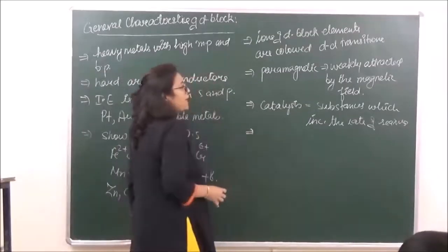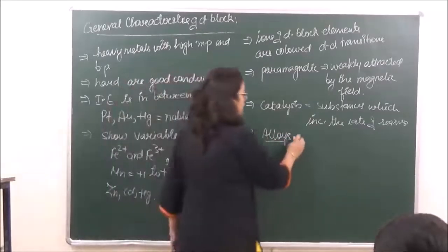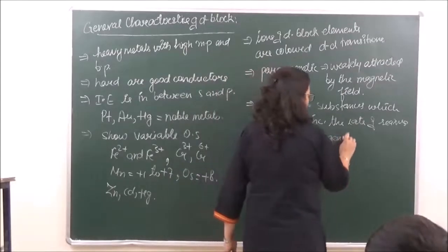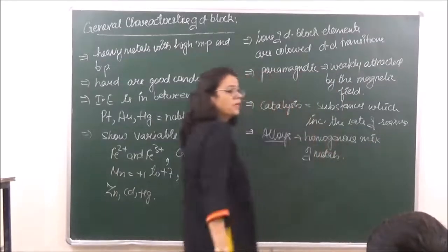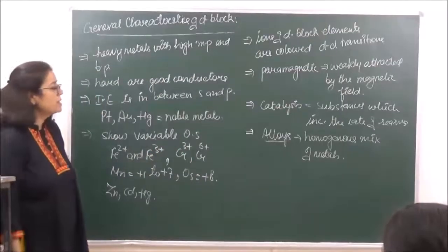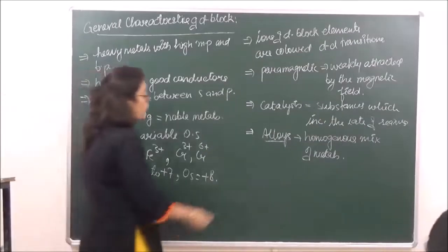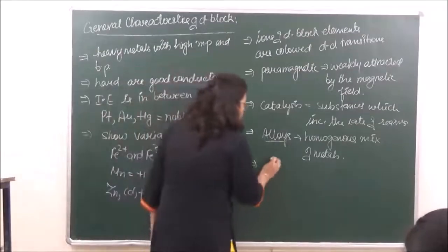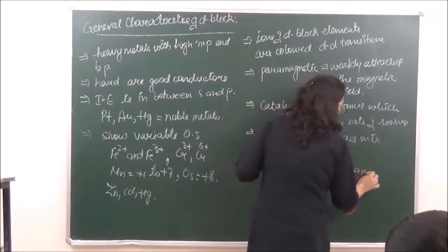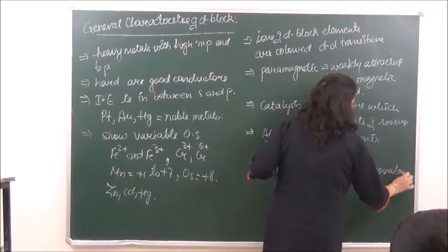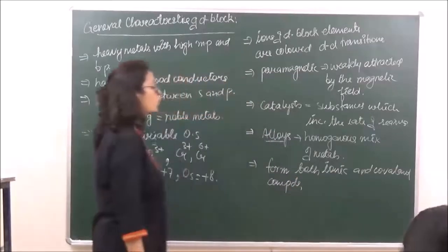Most of the D block elements have the tendency to form alloys. Alloys are homogeneous mixtures of metals. For example, bronze, brass, and gun metal are alloys formed from D block elements. Most of the D block elements form both ionic and covalent compounds.